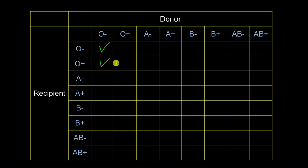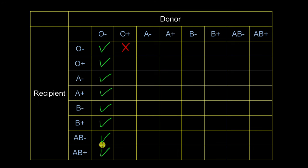What if O positive blood is donated to an O negative person? O positive donor blood has the RH antigen, but the O negative recipient does not. The recipient's body will produce antibodies against the donor blood, making this incompatible. Since O negative blood has no antigens whatsoever, no matter who it is donated to, it will always be compatible — hence O negative is called the universal donor.